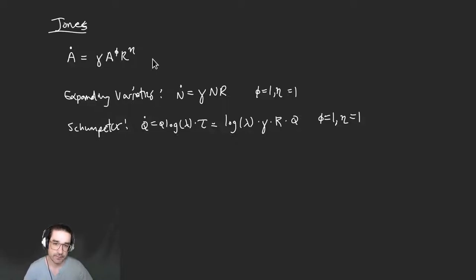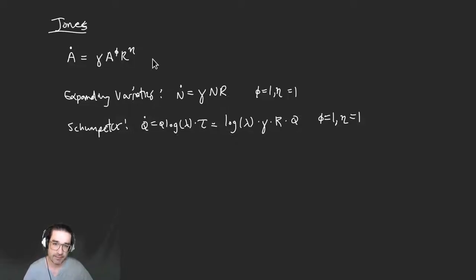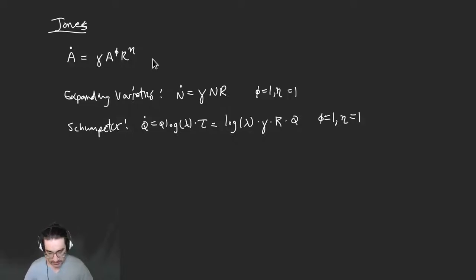There's a possibility I could deviate from phi equals one, but I probably won't. I haven't talked about things outside of the phi equals one world, so I wouldn't want to go too far from that. Eta equals one — that can present some issues.